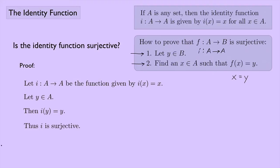Again, a boring function gives us a boring proof. Well, if something is injective and surjective, then we say that that thing is bijective. So in this case, I could say the identity function is bijective.